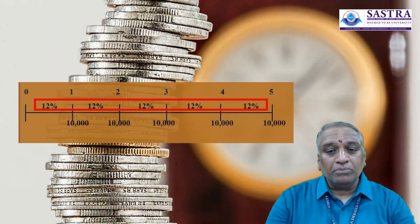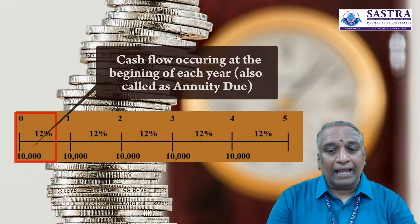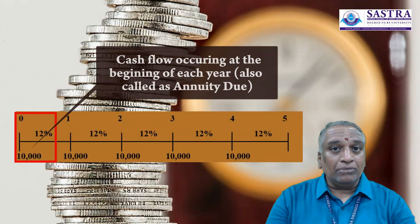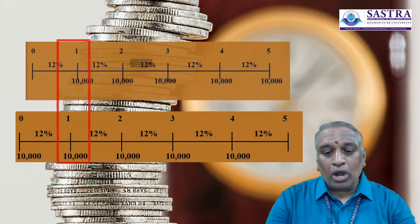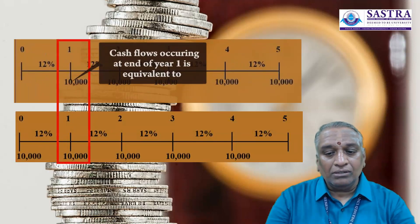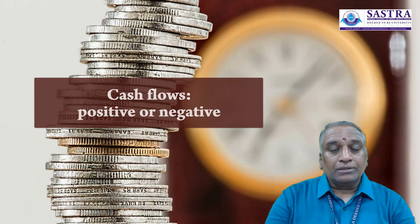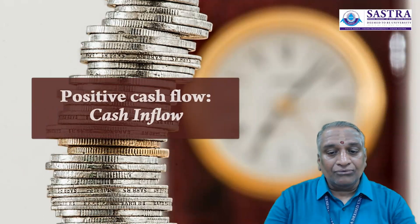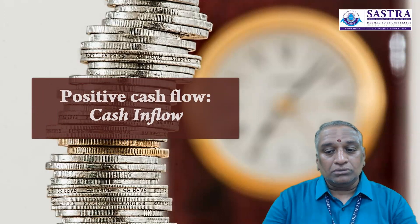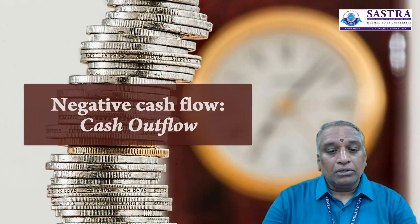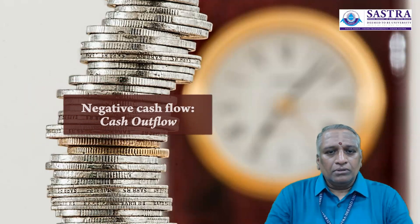The discount rate may differ from period to period. If the cash flows occur at the beginning rather than at the end of each year, the timeline would appear differently. A cash flow occurring at the end of year one is equivalent to a cash flow occurring at the beginning of year two. Cash flows can be positive or negative. A positive cash flow is called a cash inflow and a negative cash flow is called a cash outflow.